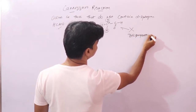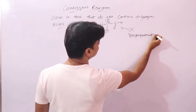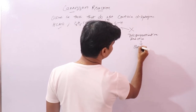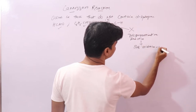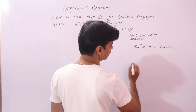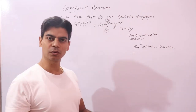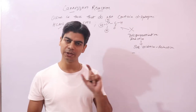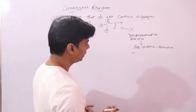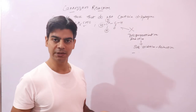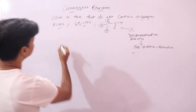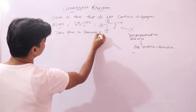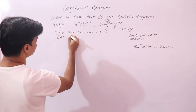The second important point is that it is a disproportionation reaction — meaning self oxidation and reduction. One molecule undergoes oxidation and the other undergoes reduction. This reaction takes place in the presence of concentrated sodium or potassium hydroxide, say 50% concentrated sodium hydroxide.